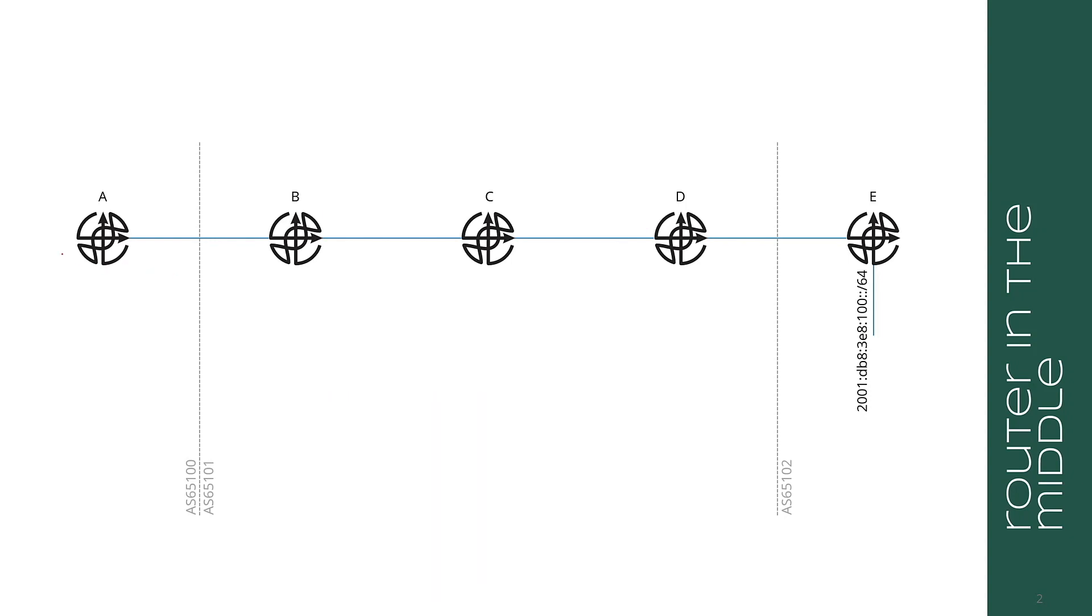Now in the case where something behind A, say we have a host attached here and it wants to send a packet towards 100::/64, say there's a server or something out here. This packet is going to traverse the EBGP link to B and then to C.